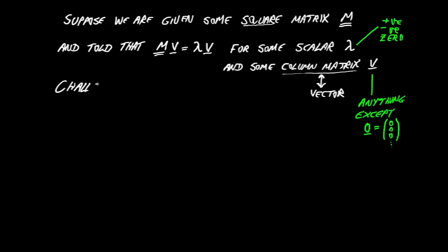Our challenge, then, is that we're going to be given a square matrix M, and we have to look for any scalar lambda and vector V that satisfies the equation. And such a scalar is called an eigenvalue, and such a vector is called an eigenvector. So in that language, M multiplied by some eigenvector gives us back that eigenvector, just multiplied by a scalar, the eigenvalue.